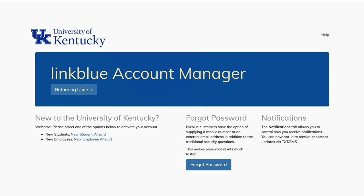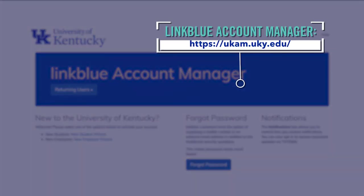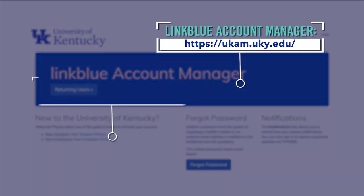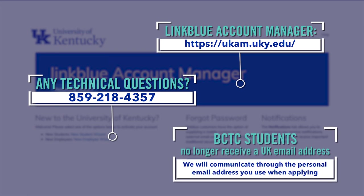First, go to the UKIT website so you can set up your university-assigned email account. All official email communication related to your housing application will be sent to your UK email address.